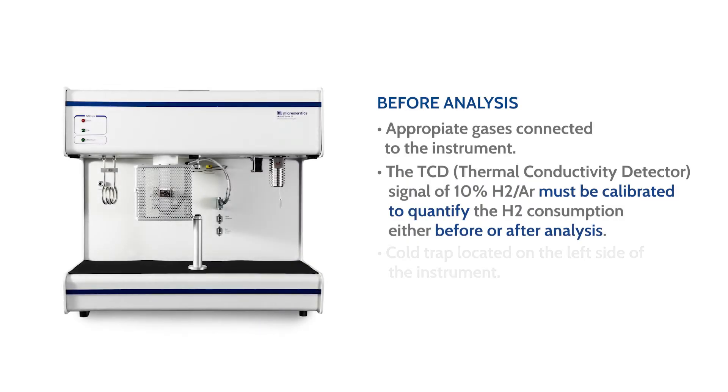And lastly, a cold trap must be prepared and placed on the cold trap loop on the left-hand side of the instrument. The current standard cold trap is an isopropanol slush bath made with liquid nitrogen which will be shown later in this video.